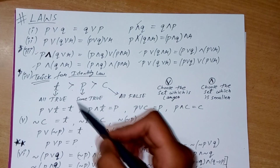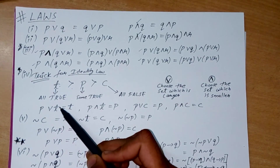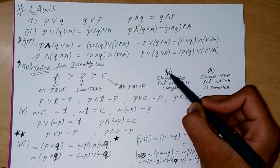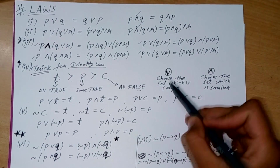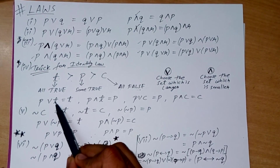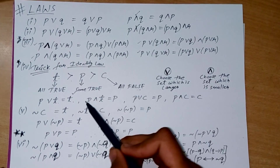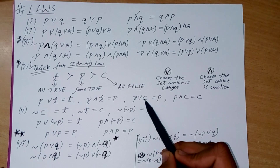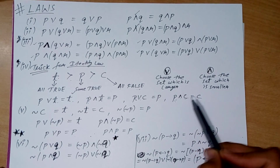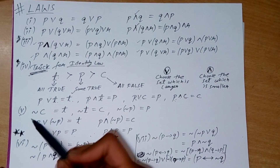Here's a trick using three sets T, P, and C: T contains all true values, P contains some true values, and C contains all false values. For OR, choose the larger set; for AND, choose the smaller set. So P or T = T, P and T = P, P or C = P, P and C = C. Remember: TPC.